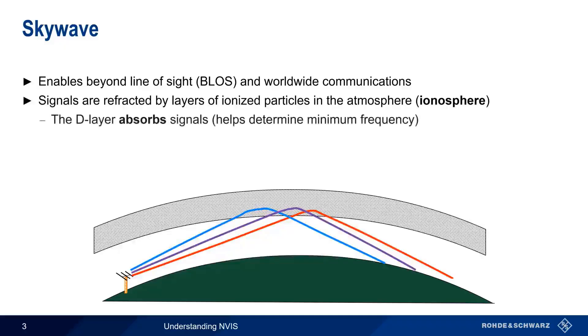One of these layers, the D layer, acts to absorb signals and helps determine the minimum frequency that can be used. The lower the frequency of a signal, the more heavily it's attenuated by the D layer. Another layer, the F layer, refracts signals to allow communications well beyond line of sight, and the level of F layer ionization determines the maximum usable frequency.